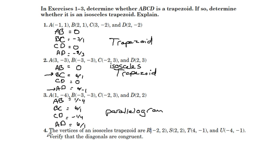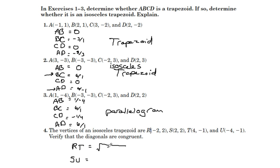For number four, the vertices of an isosceles trapezoid are: R is negative two, two; S is two, two; T is four, negative one; U is negative four, negative one. Verify that the diagonals are congruent. The diagonals would be RT and SU, and if we apply the distance formula for both of them, RT has a distance of square root of 45, and SU has a distance of square root of 45 as well.